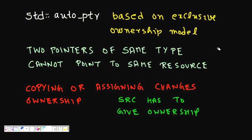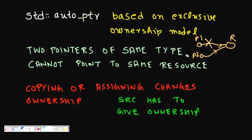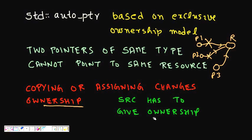Two pointers of the same type cannot point to the same resource with auto pointer. If pointer one is pointing to a resource and pointer two also points to it, then p1 loses ownership and p2 owns it. Similarly, if p3 points to it via copy constructor or assignment operator with p2, then p2 loses ownership. So basically only one pointer exists for the resource — that's exclusive ownership.